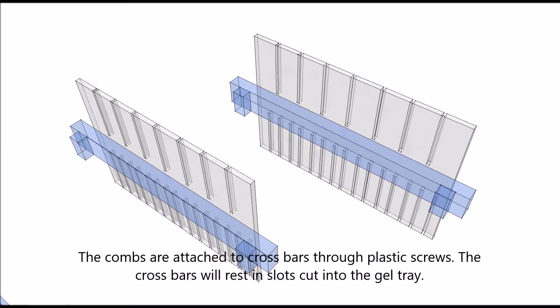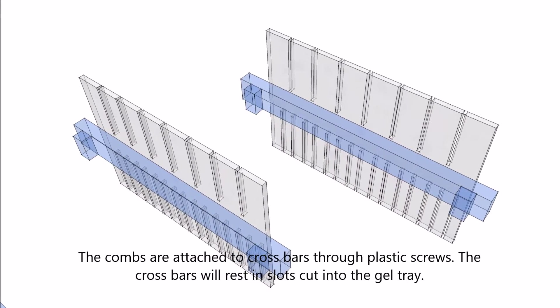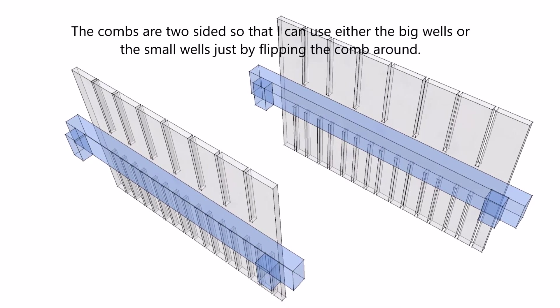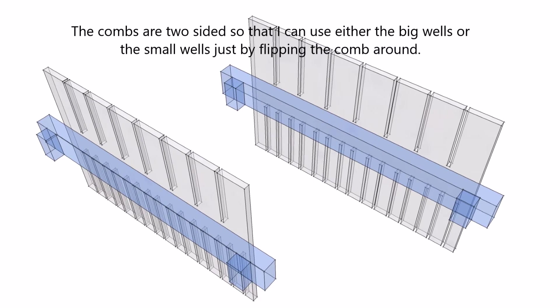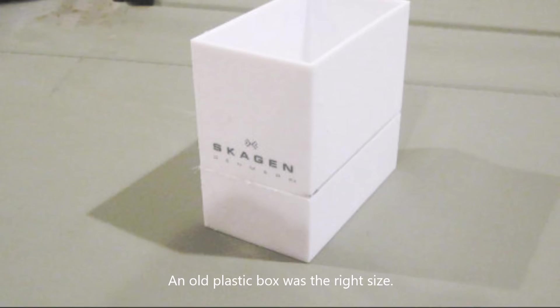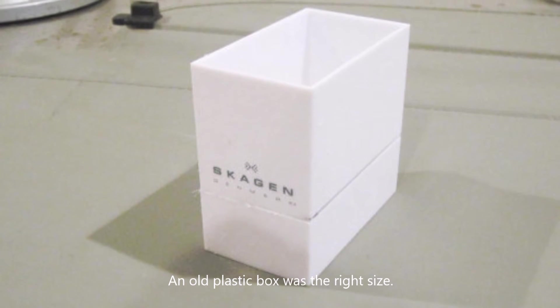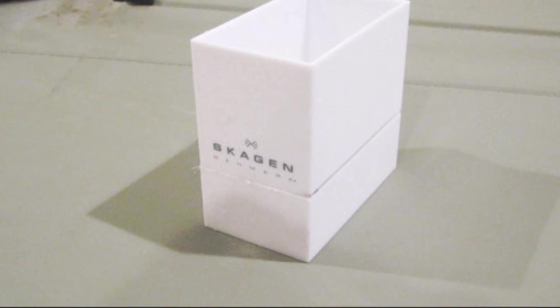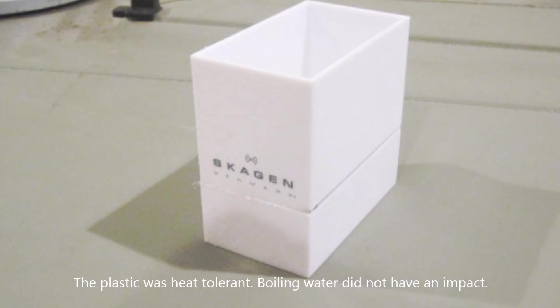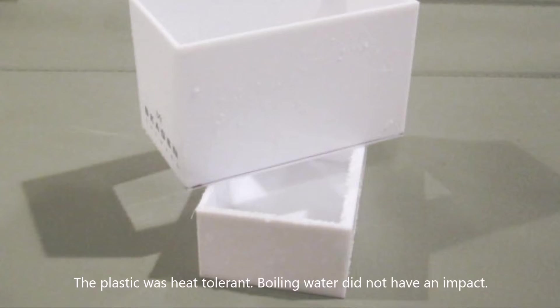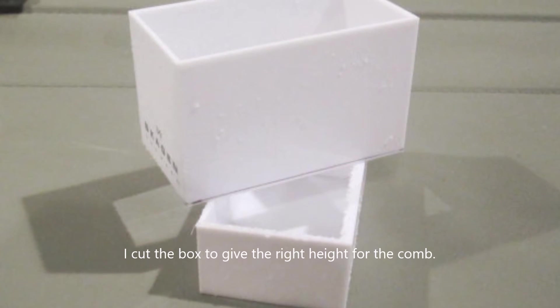Next step was making the gel combs. So these are held in the gel tray with acrylic cross-braces. And then there are two sets of combs, so you can either use big sample wells or small sample wells depending on how many samples you have. I was fortunate to have a plastic box which was approximately the right dimensions. So I put this in the microwave with water, heated it. It survived quite well, so that was a big relief.